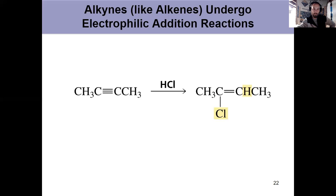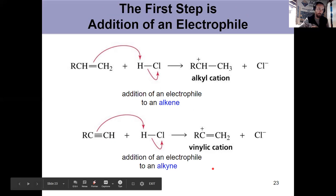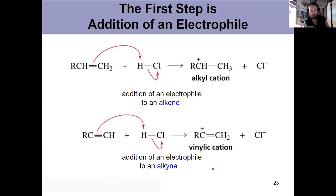If I take an alkyne and expose it to a hydrogen halide, the first step is the addition of the electrophile. Previously with an alkene, that would have made an alkyl cation. We're making a different type of carbocation when I add a hydrogen halide to an alkyne.